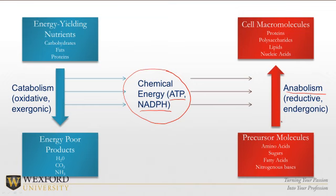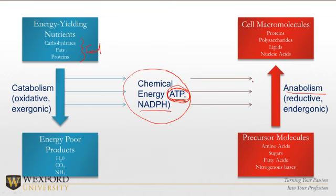Think of it this way: ATP, our main energy molecule, is like gasoline — our main fuel source, like gasoline for a car. But we don't take crude oil out of the ground and stick it in our gas tank — we have to refine it first. Same idea: we take our crude oil, our food, break those bonds down, and transfer the energy in those bonds to ATP, NADH, and NADPH — a form of energy we can use. Then we can use that for building bigger molecules.